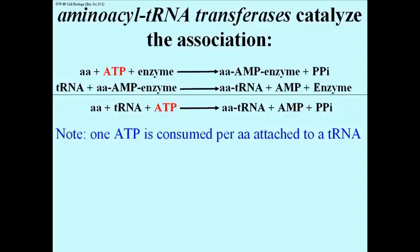Polypeptide synthesis is one of the most expensive biochemical reactions a cell can do. One of the first expenditures of free energy is this ATP that has to be consumed to make every aminoacyl tRNA that's going to be used in translation.